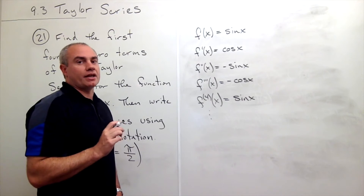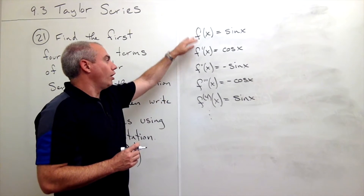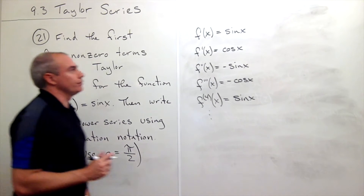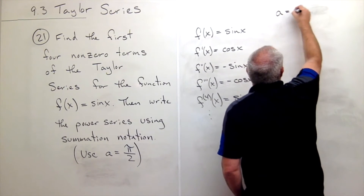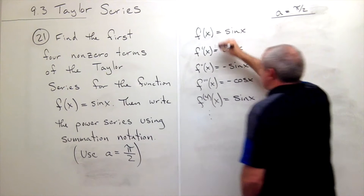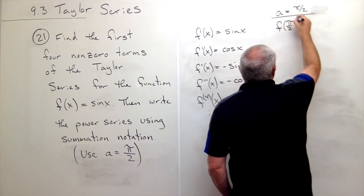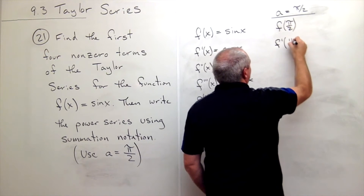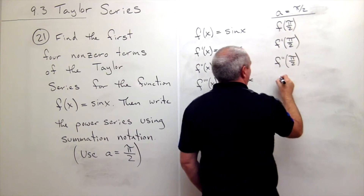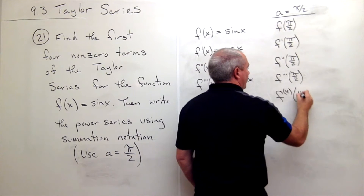The second thing I want to do is plug in whatever the a value is to all of these derivatives. We know in this case we want to use that a is equal to pi over two. So I want to plug pi over two in to each of these derivatives — f of pi over two, f prime of pi over two, f double prime of pi over two, f triple prime of pi over two, and f quadruple prime of pi over two.